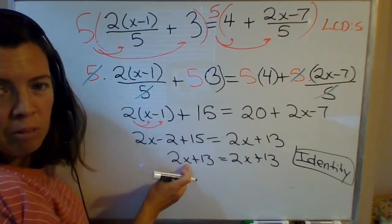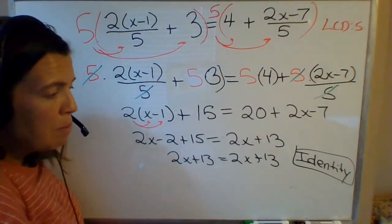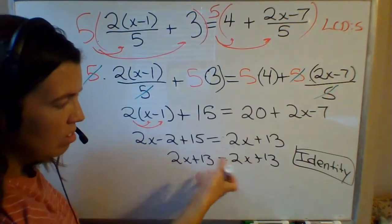Whatever number we try to put in place of x we're going to do the exact same thing to it on both sides, so it's always going to be equal. You could try this out - plug in whatever x you want, the equation is going to be satisfied.